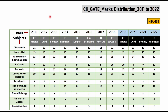This is the marks distribution from 2011 to 2022 — the last 12 years. On the left side, going from top to bottom, you will see 11 subjects: Mathematics, Aptitude, Fluid Flow plus Mechanical Operations, Heat Transfer, Mass Transfer, CRE, Thermodynamics, PDC, Chemical Technology, Plant Design, and finally CEPC — Process Calculations. I grouped Fluid Flow and MO as one subject because they share a lot of concepts.